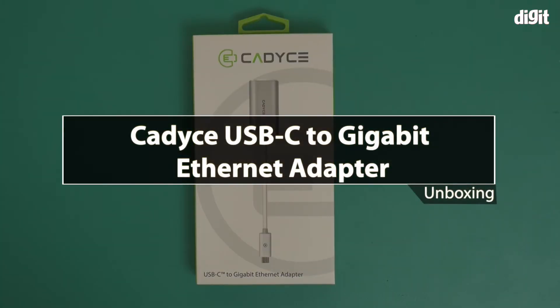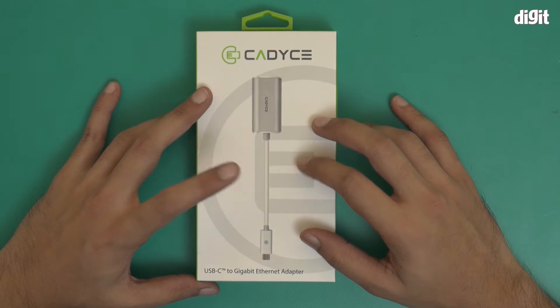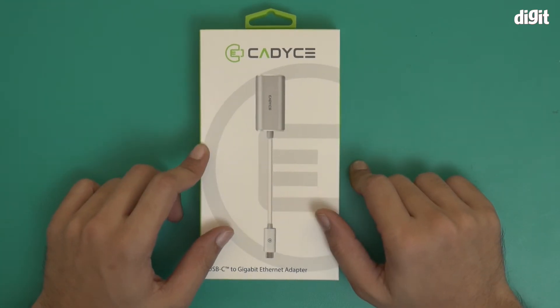Hello and welcome to the unboxing of the Cadyce USB-C to Gigabit Ethernet adapter. There is a photo of what this adapter is supposed to look like on this side of the box.